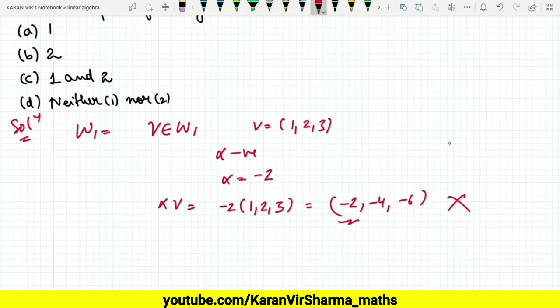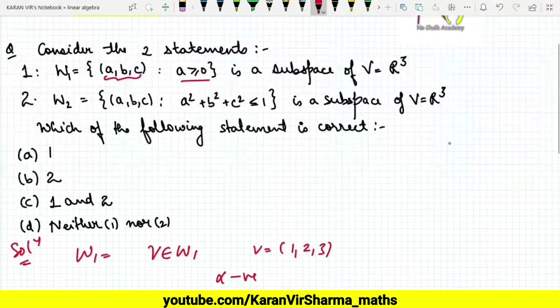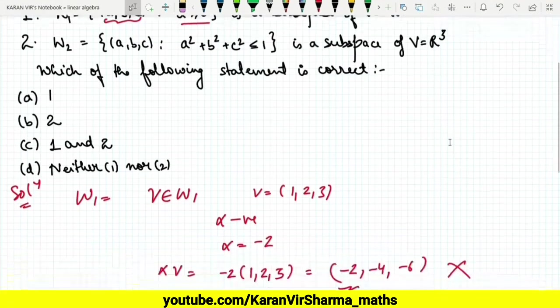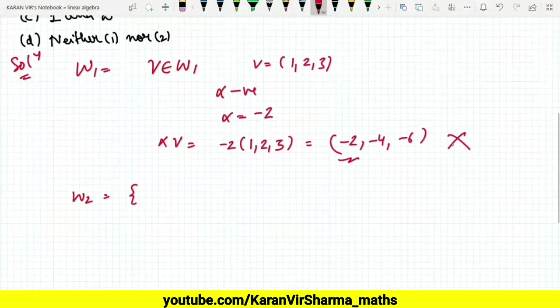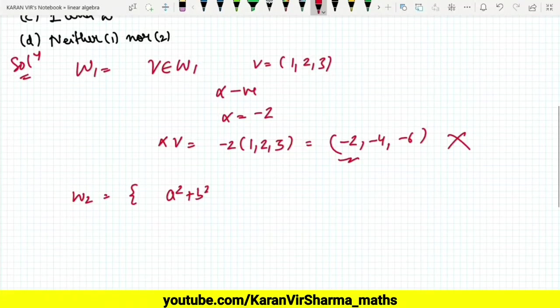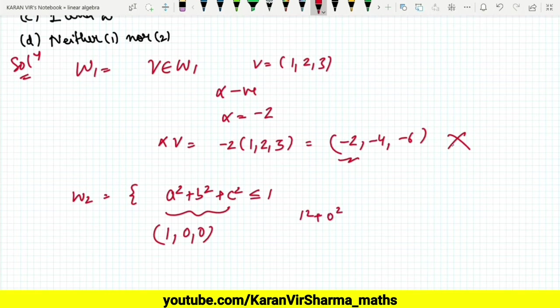Now let's see for W2. W2 is the space (a,b,c) such that a² + b² + c² ≤ 1. So let's consider such elements. First of all, clearly (1,0,0) belongs to this, why? Because 1² + 0² + 0² = 1, which is exactly equal to 1, so this belongs to W2.